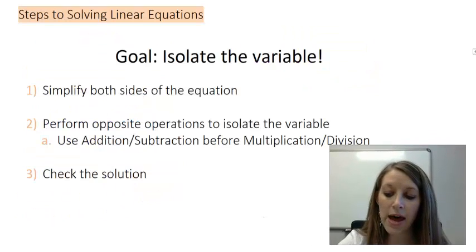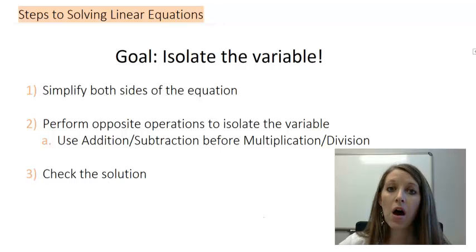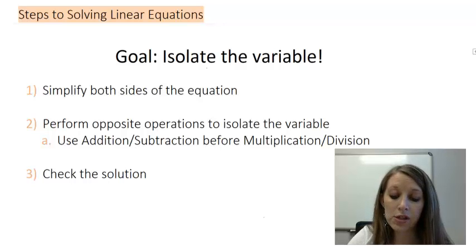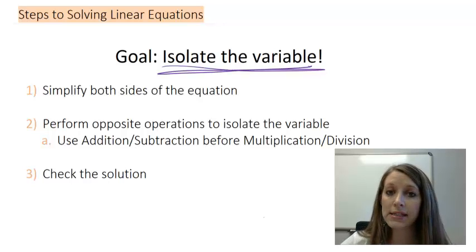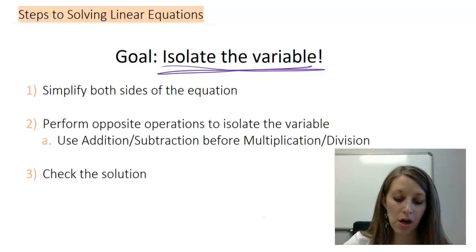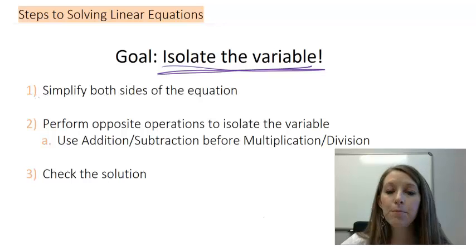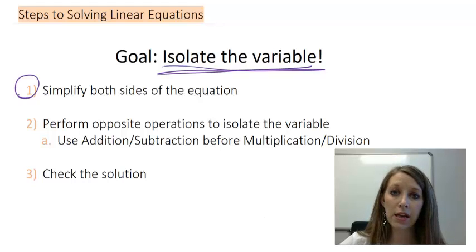Our ultimate goal is to basically get your variable all by itself on one side of the equal sign. It's usually more natural for us to put the variable on the left, but it works just the same if your variable ends up on the right. So our goal is to isolate the variable. Our steps in doing so is, if you can, simplify both sides of the equation individually, and simplify those as far as you possibly can. Then we're going to start rearranging things around that equal sign.